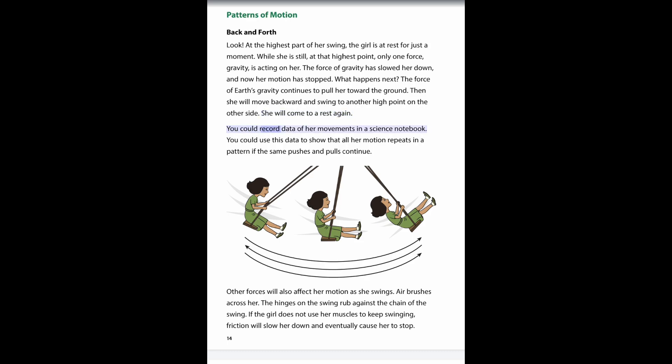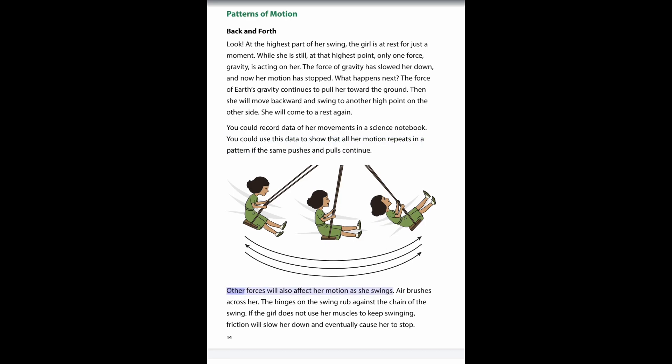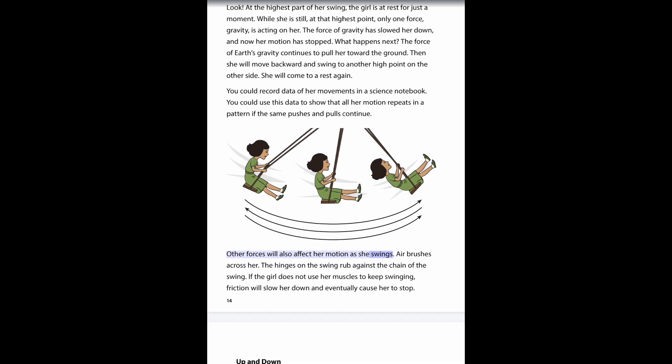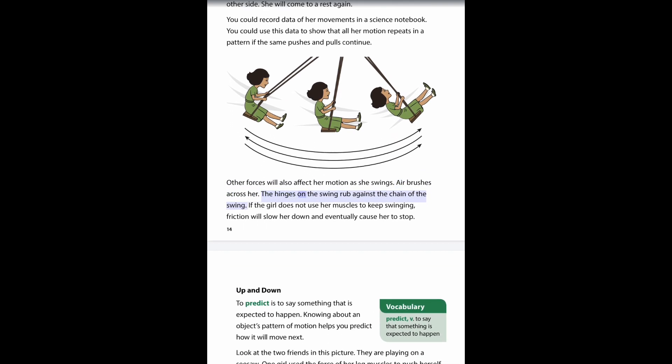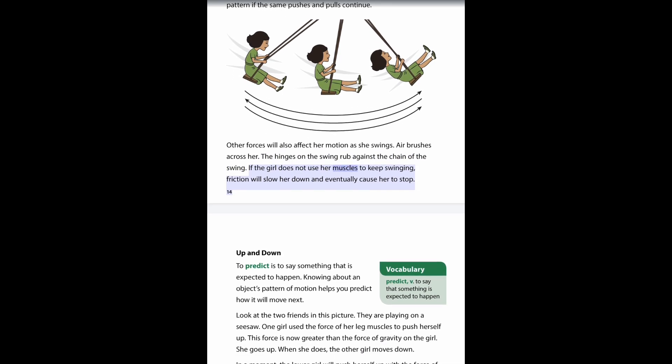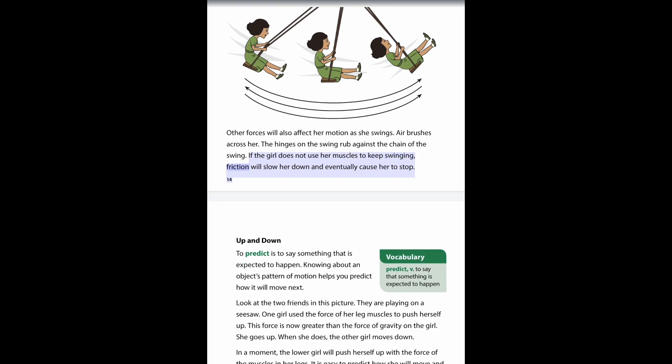You could record data of her movements in a science notebook. You could use this data to show that all her motion repeats in a pattern if the same pushes and pulls continue. Other forces will also act on her motion as she swings. Air brushes across her. The hinges on the swing rub against the chain of the swing. If the girl does not use her muscles to keep swinging, friction will slow her down and eventually cause her to stop.